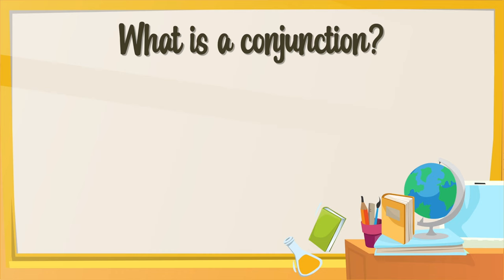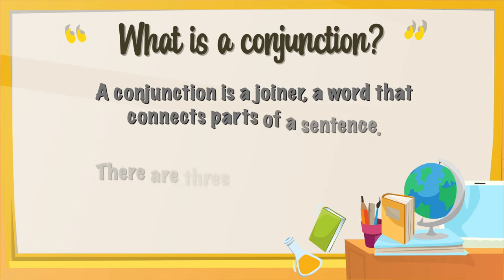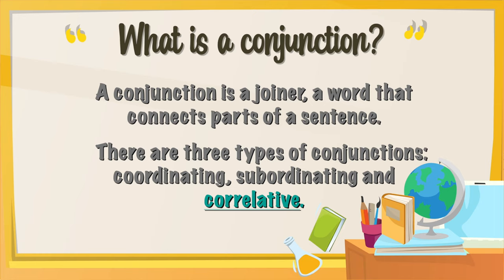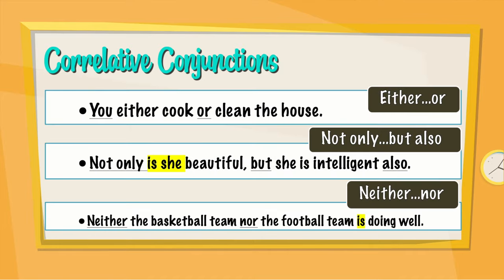What is a conjunction? Well, a conjunction is a joiner, a word that connects parts of a sentence. There are three types of conjunctions: coordinating, subordinating, and correlative. So this is what we're going to talk about today — correlative conjunctions. Let's take a look at some of them.